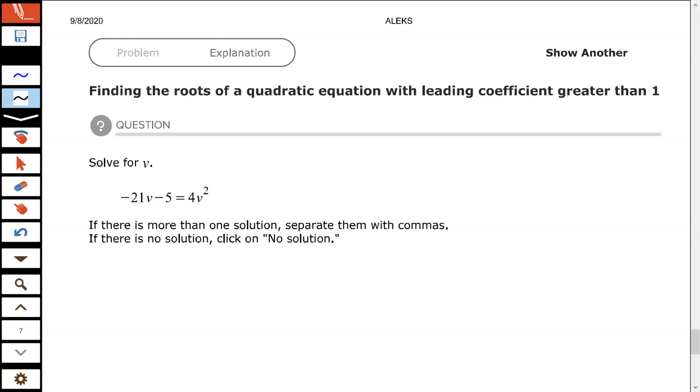All right, good people. Hope all is well. In this video we're going to look at finding the roots of a quadratic equation with the leading coefficient greater than one. First of all, you want everything on one side of the equation. You have a choice here: you can move the 4v² over to the left-hand side or you can leave it on the right-hand side.